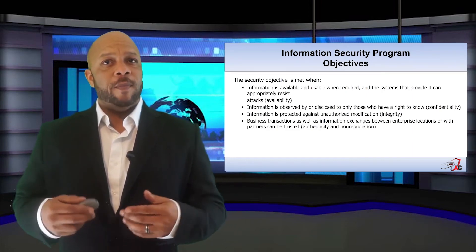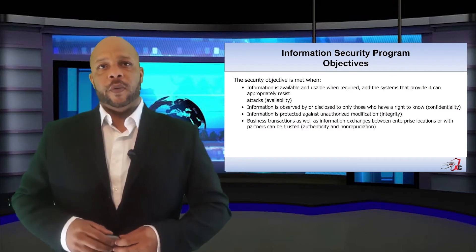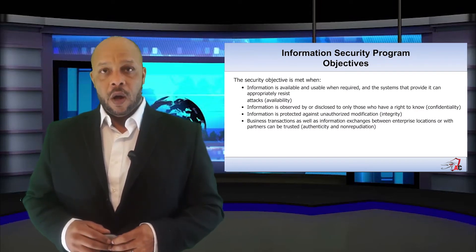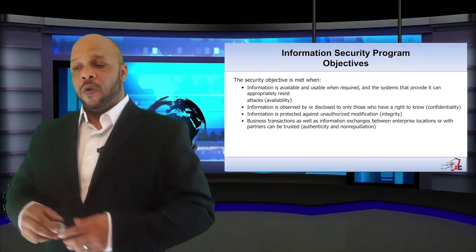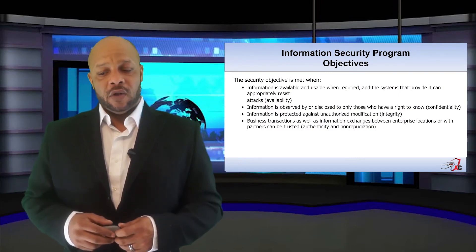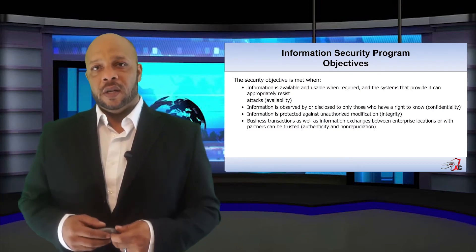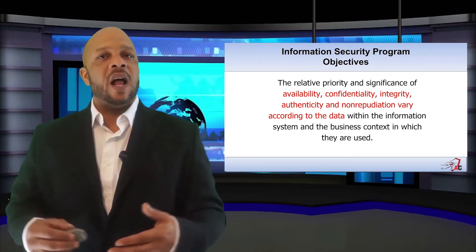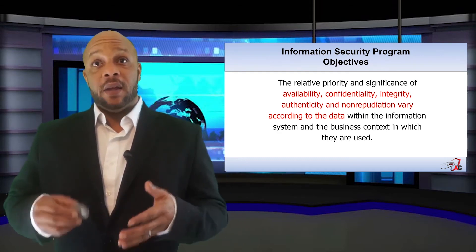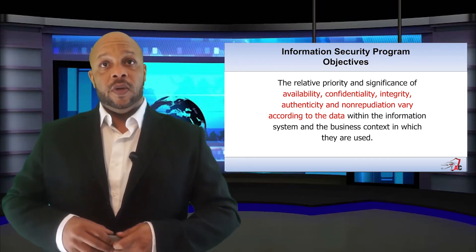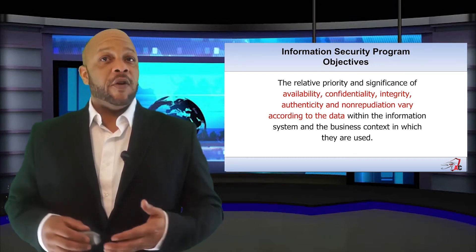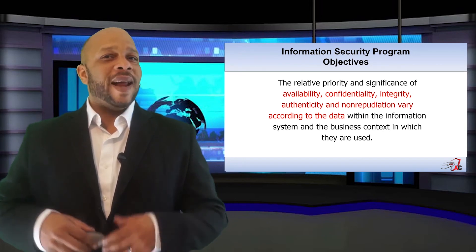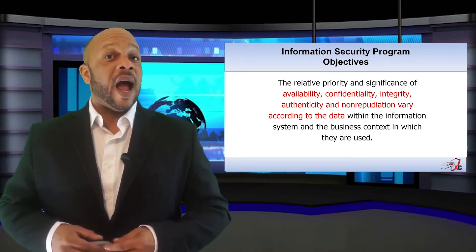How do we know when our objectives have been met? The information is available and usable when required. Information is observed or disclosed only to those with an adequate need to know. Information is protected against unauthorized modification, protecting integrity. And all business transactions can in fact be trusted. We don't collect data for data's sake — it all represents intrinsic knowledge to the organization. We need to understand the relative priority and significance, especially when it comes to availability, confidentiality, integrity, authenticity, and non-repudiation, because it varies according to the data itself. If we haven't adequately identified and classified it, we have no idea how to protect it.